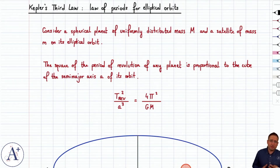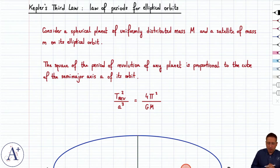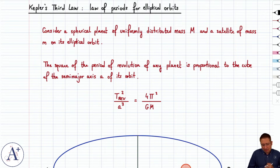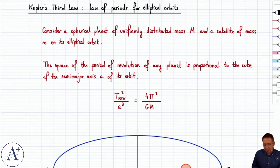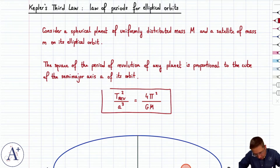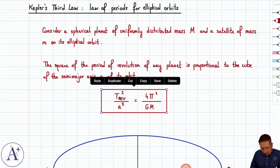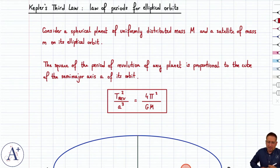We went over Kepler's third law in the simplified case of circular orbits, and that wasn't bad — it's pretty straightforward. Now let's go over the authentic version of Kepler's third law, which is the law of periods for elliptical orbits. It says that the square of the period of revolution of any planet is proportional to the cube of the semi-major axis A of its orbit. So A replaces the radius we used for the circular orbit, and we have T²_rev divided by A³ equal to 4π²/GM. We're going to successfully establish this in the case of an elliptical orbit.